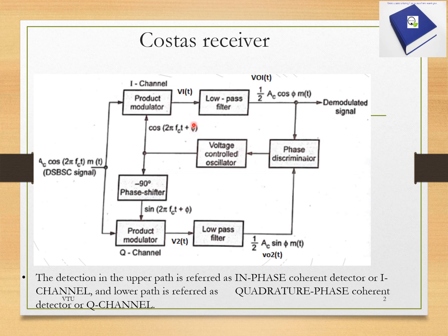When φ equals 0, only the I channel output contains the demodulated signal M(t), and there is no signal in the Q channel due to the quadrature null effect. The second case is the loss of phase synchrony between the incoming carrier and the local carrier. When φ is not equal to 0, the I channel output remains unchanged, but there will be some output at the Q channel as well, and its amplitude will be proportional to sin(φ).